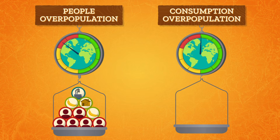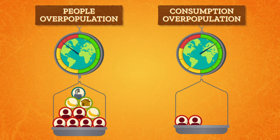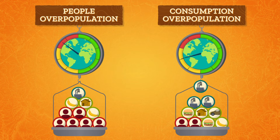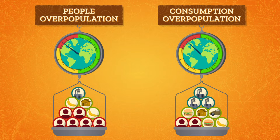On the other hand, consumption overpopulation is when there are fewer people, but each individual person uses a large quantity of natural resources. This is usually how richer countries might run out of resources. In both cases, we have to take a hard look at where we're getting our energy, especially our food energy.